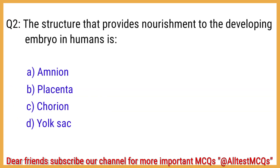Q2. The structure that provides nourishment to the developing embryo in a human is? The right answer is option B: Placenta.